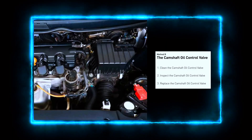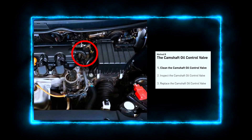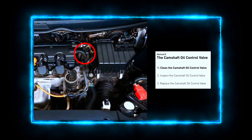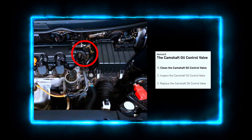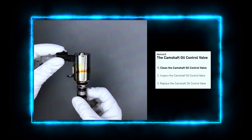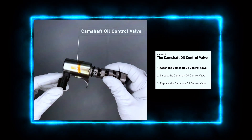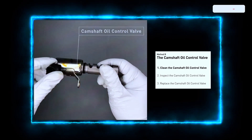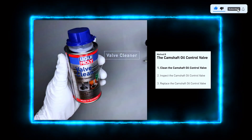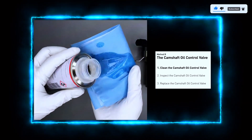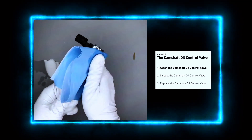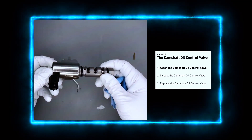Next, locate the camshaft oil control valve. Depending on your vehicle, it's usually mounted on the cylinder head near the camshaft, bolted to the engine block with an electrical connector attached. Clean the oil control valve using brake cleaner or electrical contact cleaner spray. Spray the valve thoroughly to remove any dirt or sludge buildup — be sure to clean the valve's filter and any passages. Wipe it down with a clean cloth and let it air dry for a few minutes.